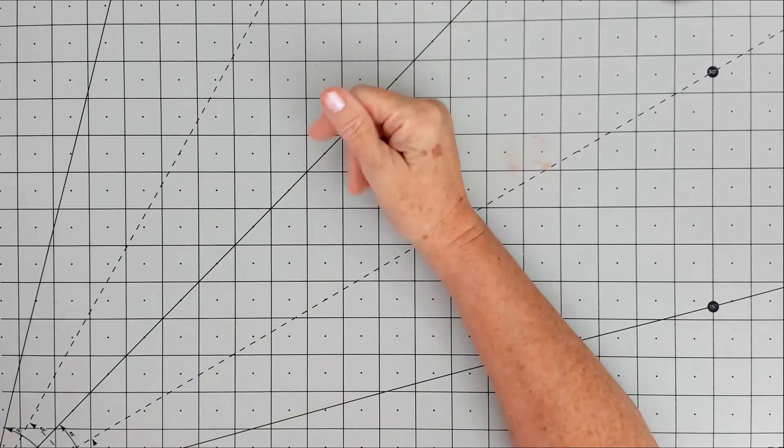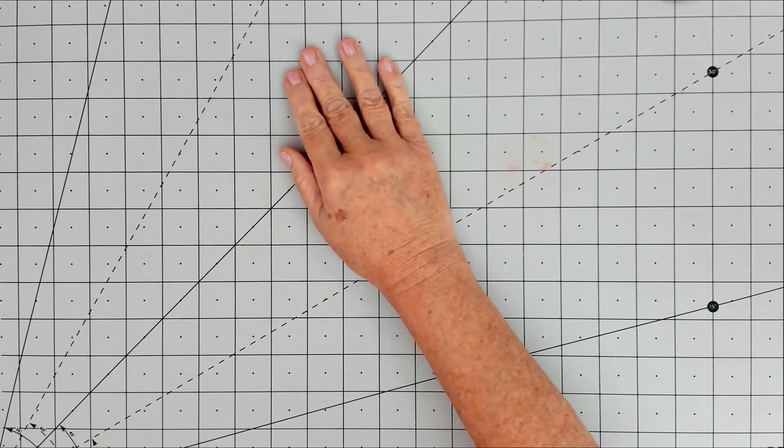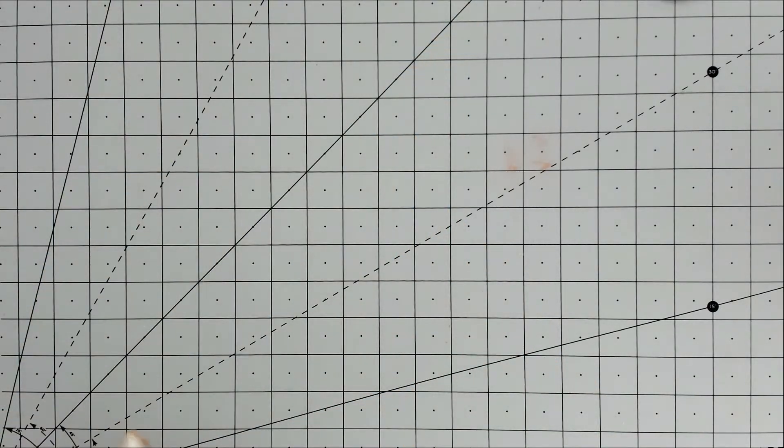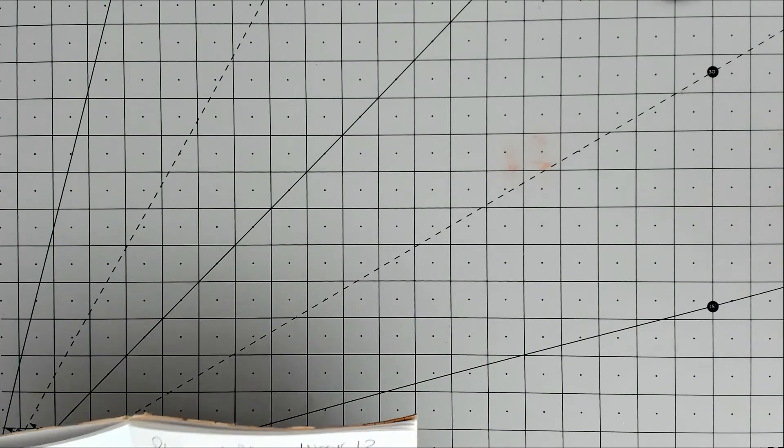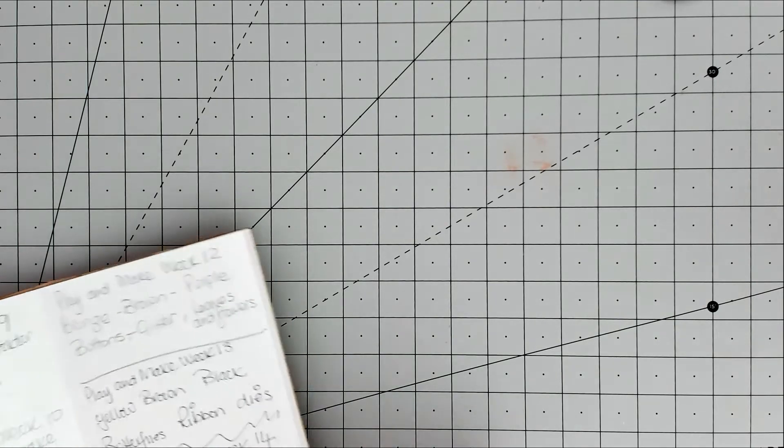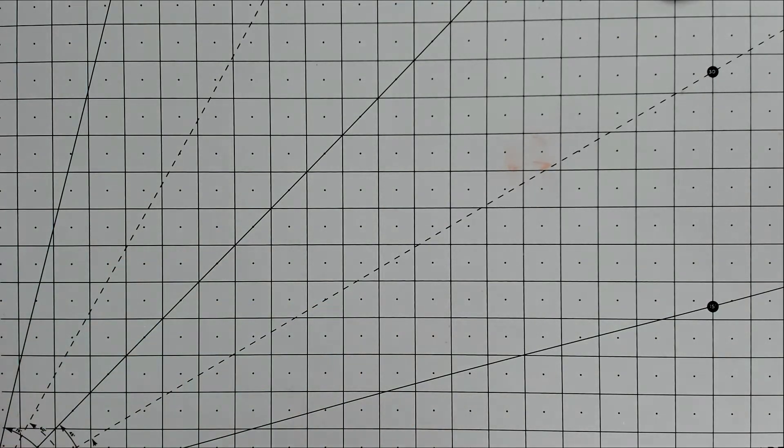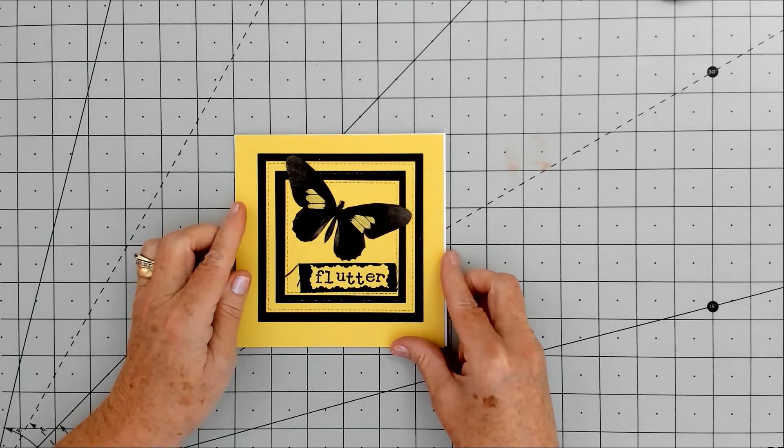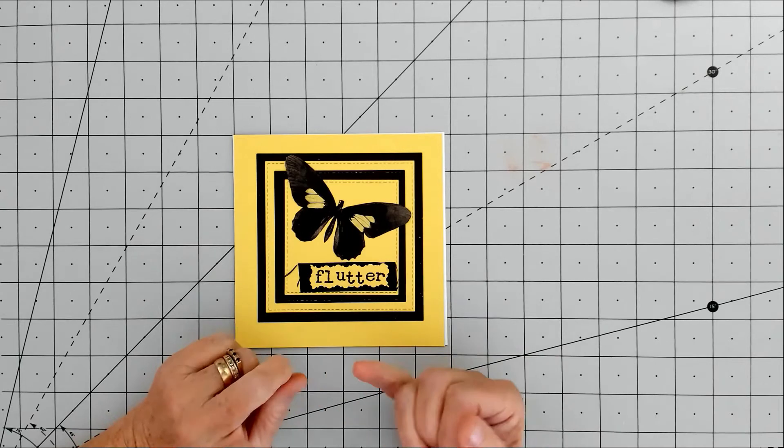This week the colors are yellow, brown, and black, and it's butterflies, ribbon, and dies. So this is not my most intricate one, but I still came up with something nice.